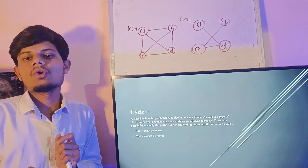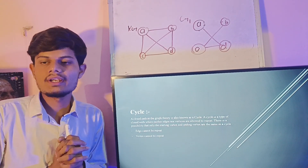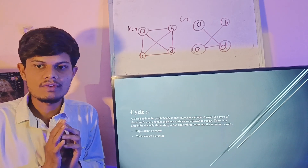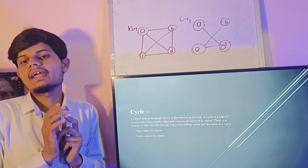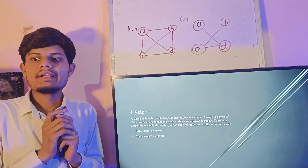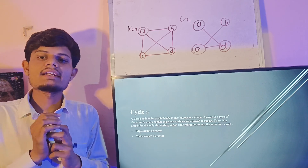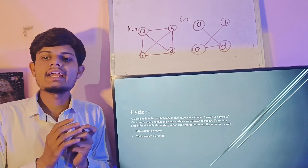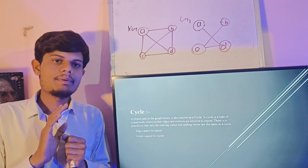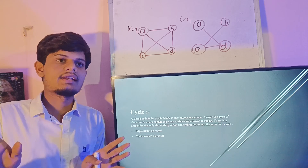Now let's move to our next topic, that is cycle. A closed path in graph theory is known as a cycle. A cycle is a type of closed walk where neither edges nor vertices are allowed to repeat. There is a possibility that only the starting vertex and ending vertex are the same in a cycle. Edges cannot be repeated and vertices cannot be repeated.